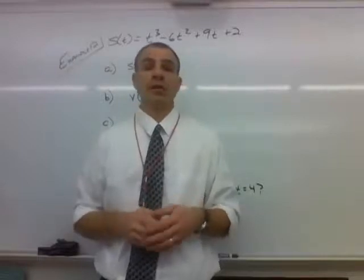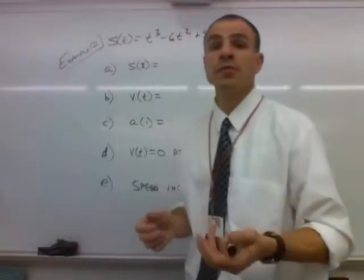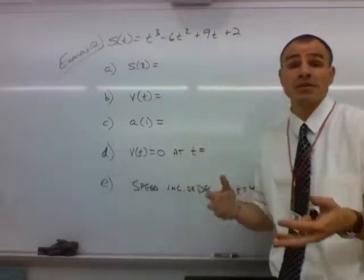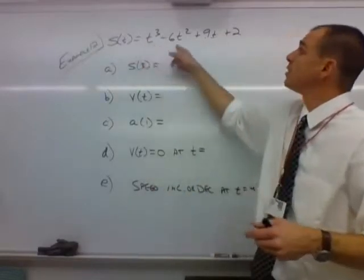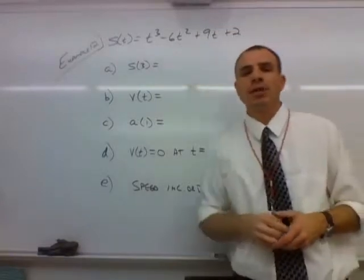So we have example number 12 now, and we see that we have a position function. This position function happens to be s of t. Again, s of t and x of t are interchangeable. So s of t is equal to t cubed minus 6t squared plus 9t plus 2.